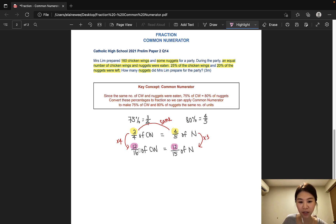Now that we have made the numerator the same, we can compare these two fractions on the same scale. So, what that means is 1 unit of chicken wings is now the same as 1 unit of nuggets. Since the question already states that 160 chicken wings were prepared at first, that would mean 16 units of chicken wings is 160. And of course, 1 unit would be 160 divided by 16 and that would be 10.